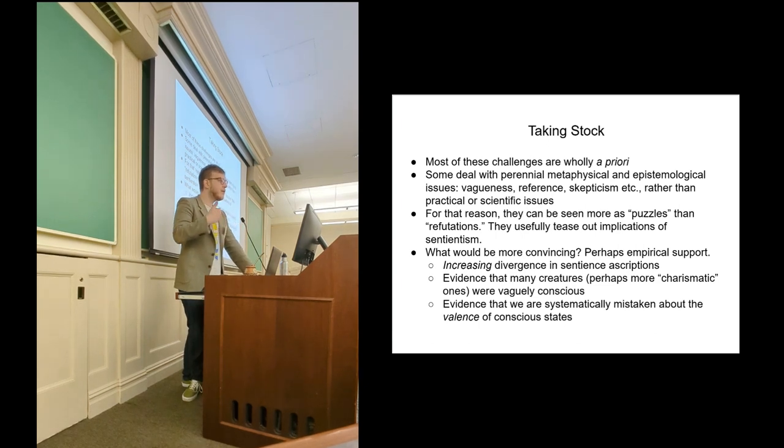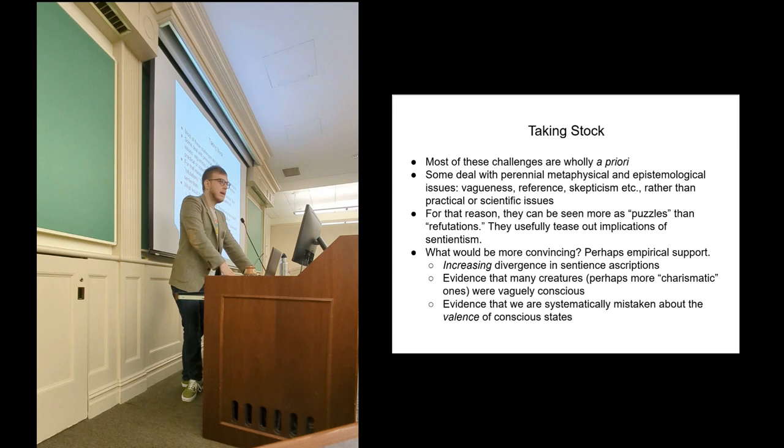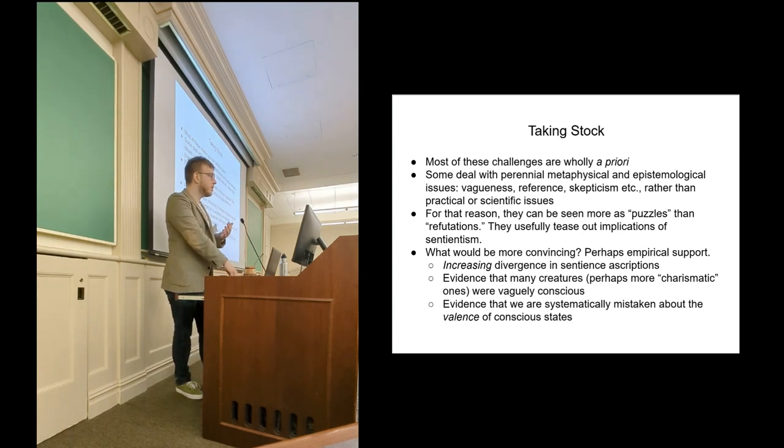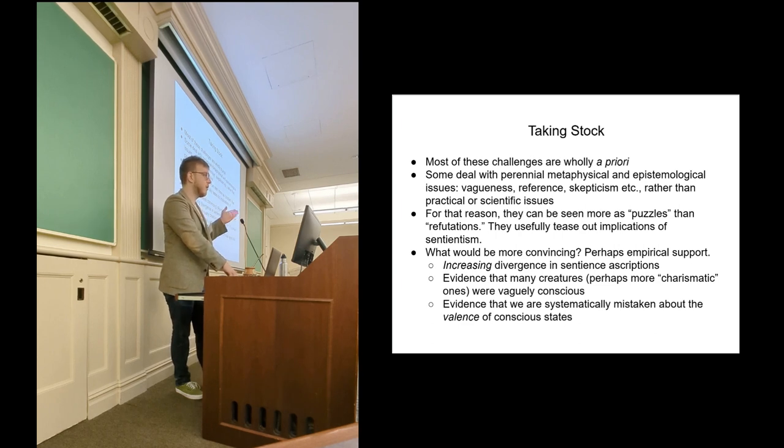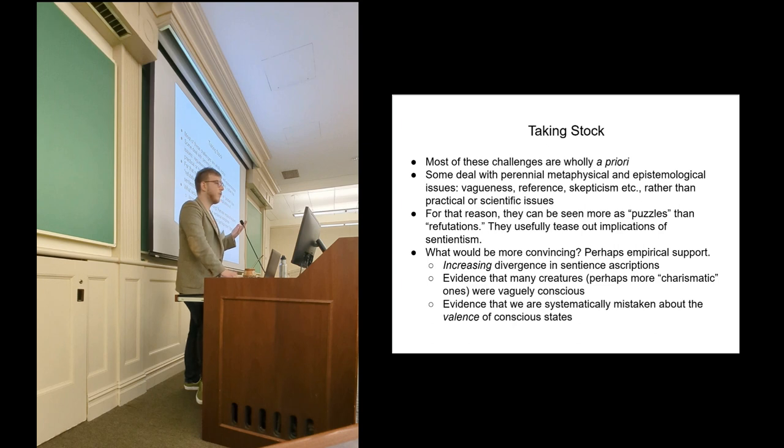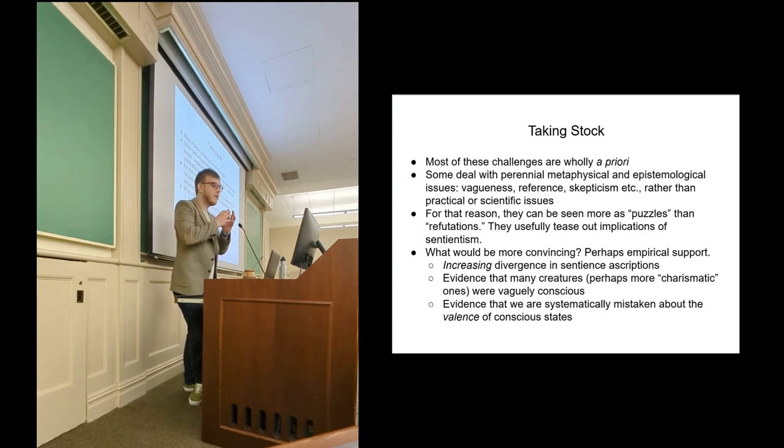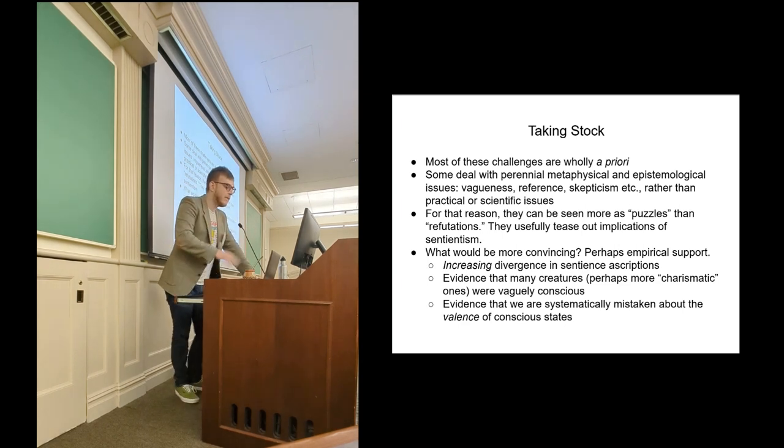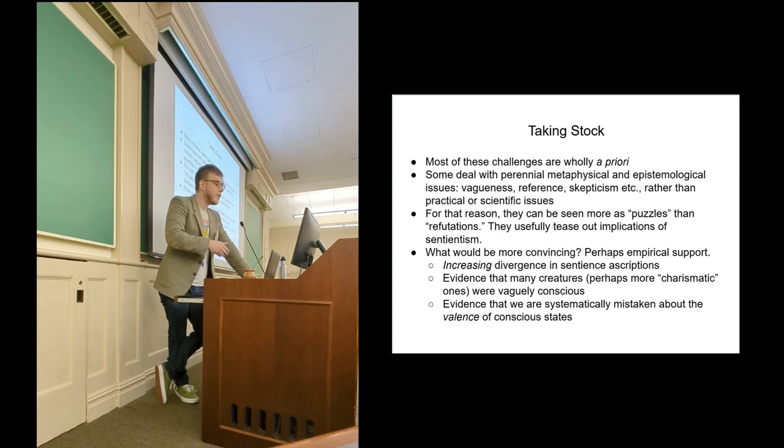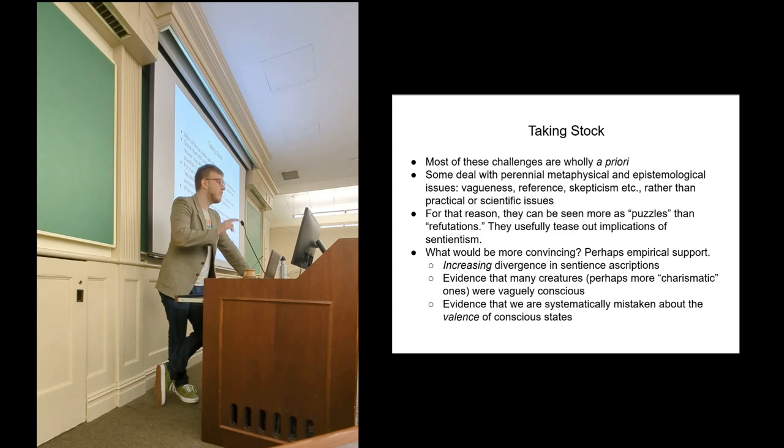And so I'm going to take stock now. A lot of these challenges are—there's the practical challenge of how do we deal with, how do we construct an animal ethics? That is very pressing. But a lot of the other challenges and the ones I couldn't go into today are dealing with perennial metaphysical issues. They're dealing with sorites paradoxes, with skepticism, with vagueness. And for that reason, I think that they can be seen more as puzzles. They're metaphysical, philosophical issues, and they're not something that we should feel is a pressing need to refute sentientism. So what are some ways that we could possibly have a more convincing case? Well, we could find some empirical evidence. We can see increasing divergence in sentience descriptions. If scientists started branching apart instead of converging, we can see that a lot of creatures might be vaguely conscious. I couldn't really get into that today. And we could also see some evidence that we are systematically mistaken about the valence of conscious states, which is a lot of the research we saw starting today might be implicated in.